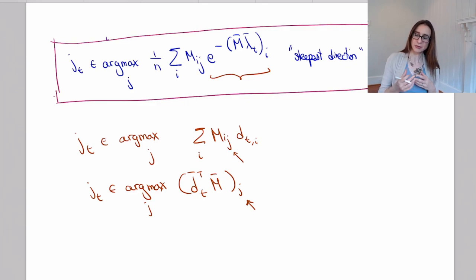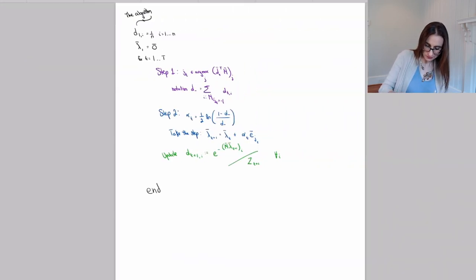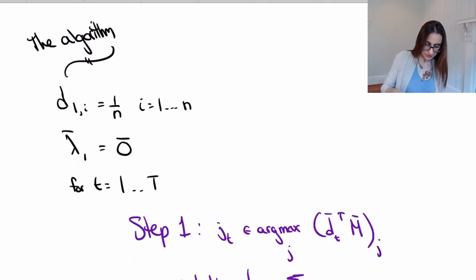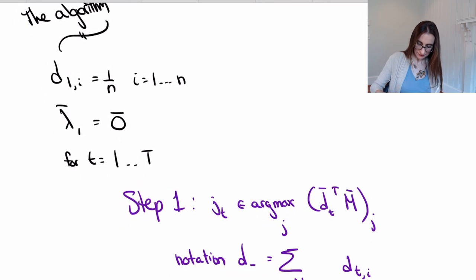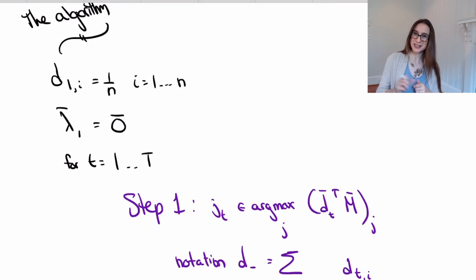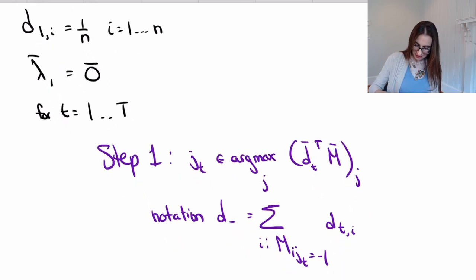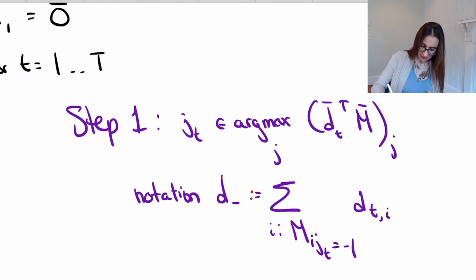Now I can actually write down a coordinate descent algorithm. It's not going to look quite like AdaBoost yet, but it'll get closer soon. Here's my algorithm: I start by initializing the weight vector to be uniform, initialize my coefficient vector to 0, then at each iteration I figure out which direction to travel in.